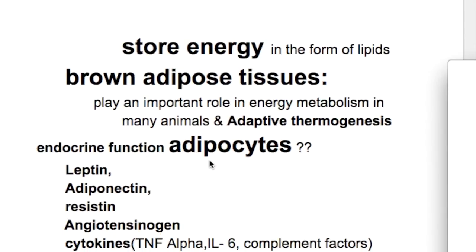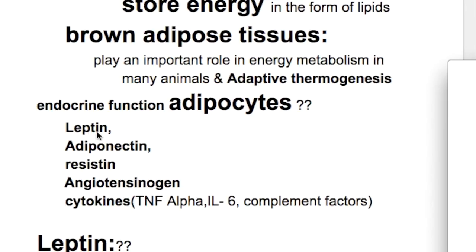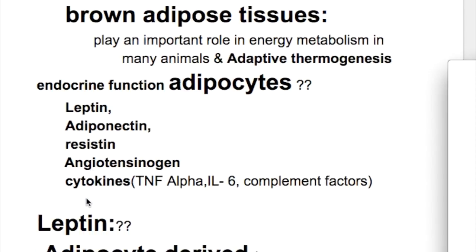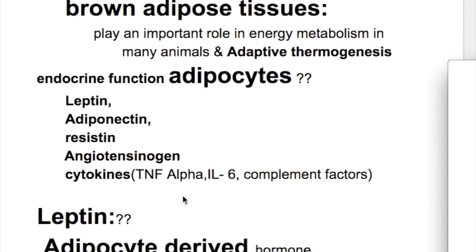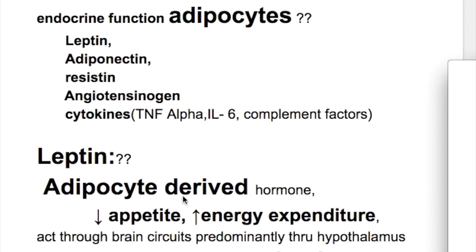What is the endocrine function of adipocytes? The hormones produced from adipocytes are leptin, adiponectin, resistin, angiotensinogen, and cytokines that include tumor necrosis factor alpha, interleukin-6, and complement factor.